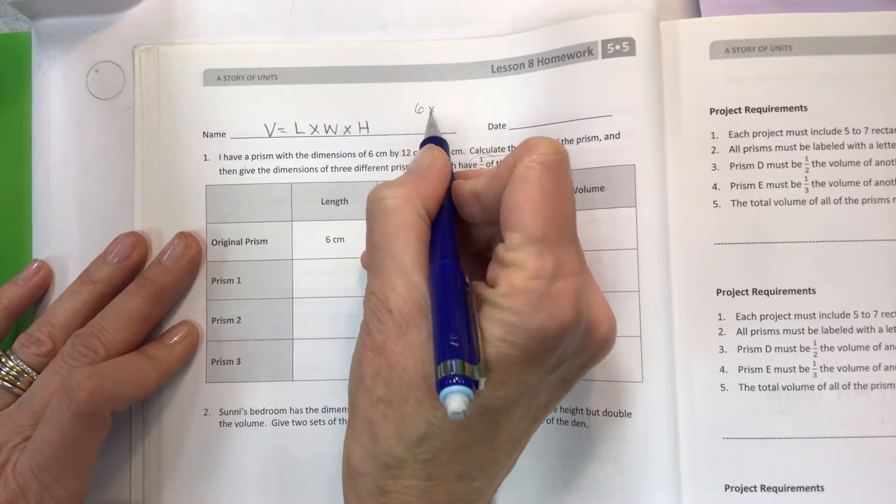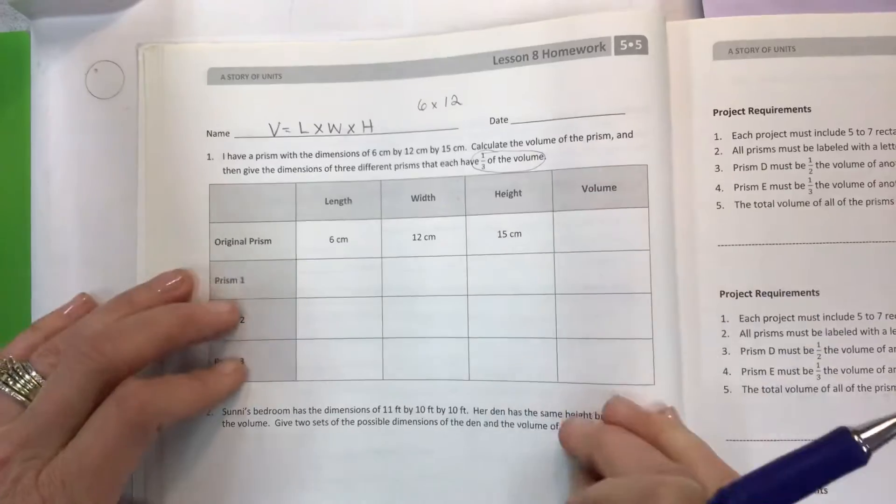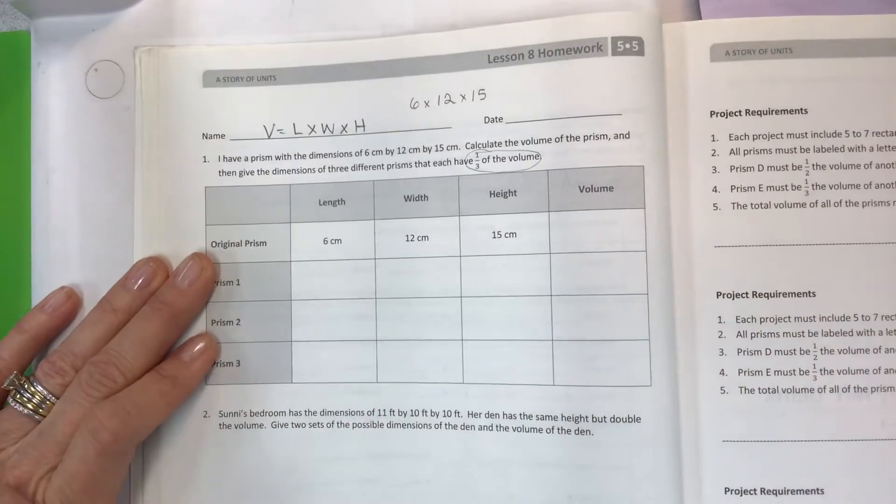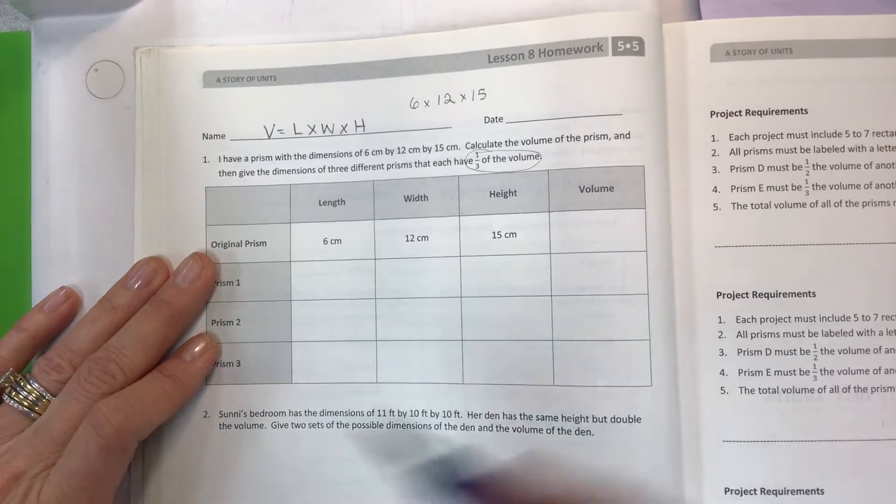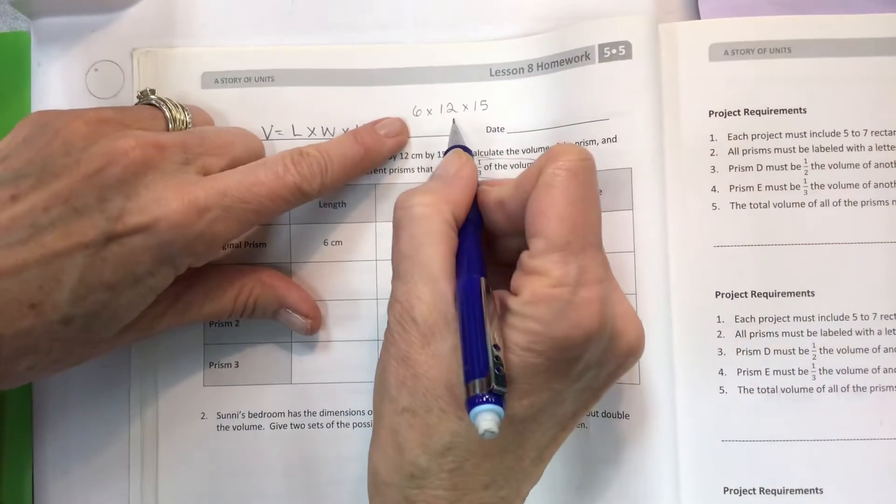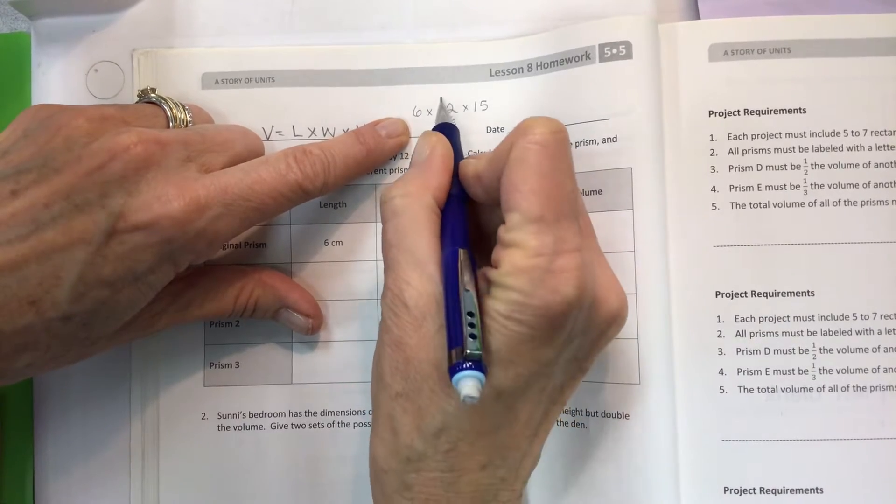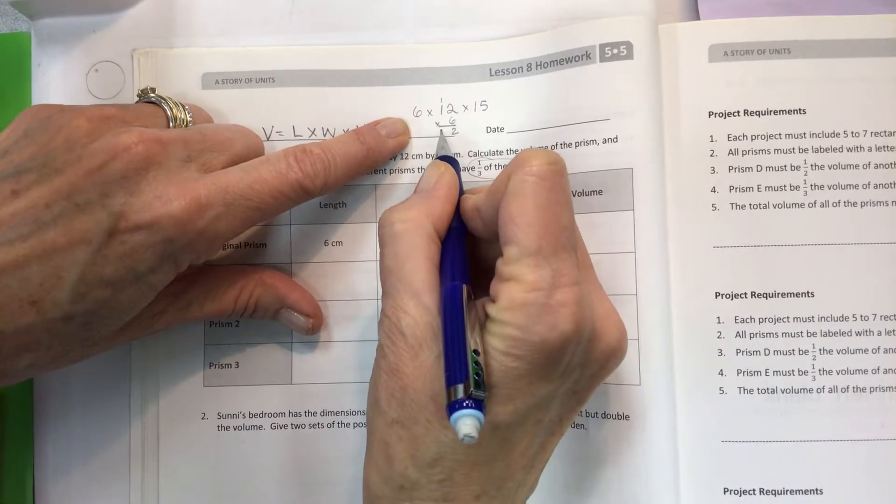So here we have our 6 times 12, and I love how they give us all this and then no place to work it out, times 15. No easy way to get around it, so we just need to start multiplying. I'm just going to move this over here. 6 times 2 is 12, 6 times 1 is 6 plus 1 is 7.